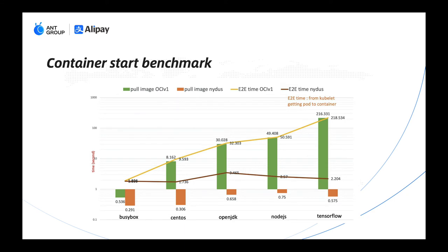Let's take a look at Nydus' performance. The testing uses BusyBox, CentOS, OpenJDK, Node.js, and TensorFlow images. As we can see, as image size increases, OCI image pull time also increases. TensorFlow image pull time increased to more than 200 seconds, while the Nydus image pull time is always kept at the millisecond level. End-to-end container start time is only about 2 seconds.